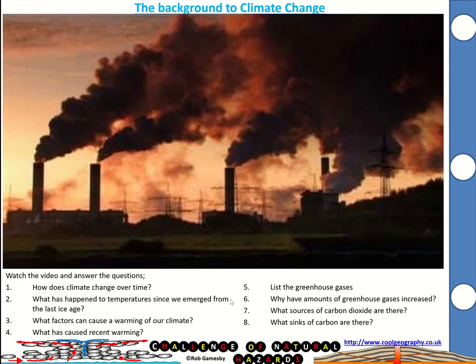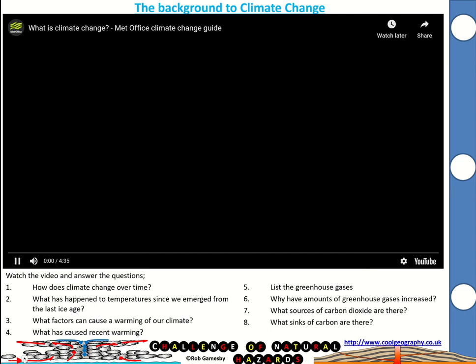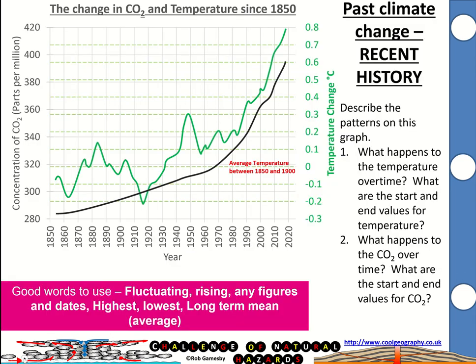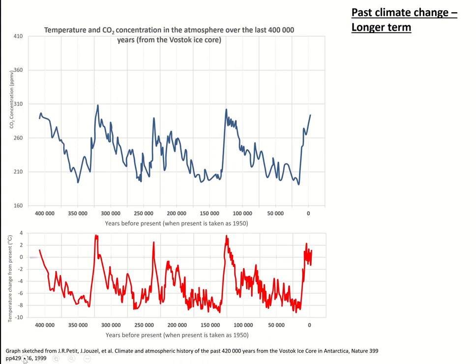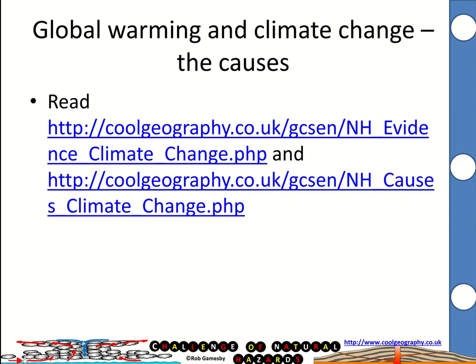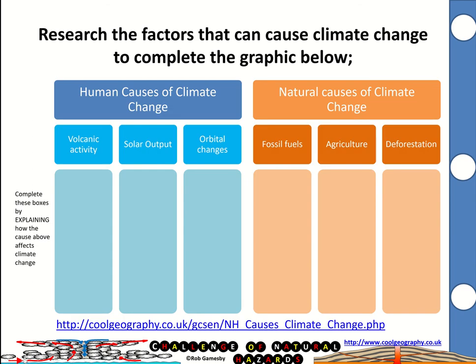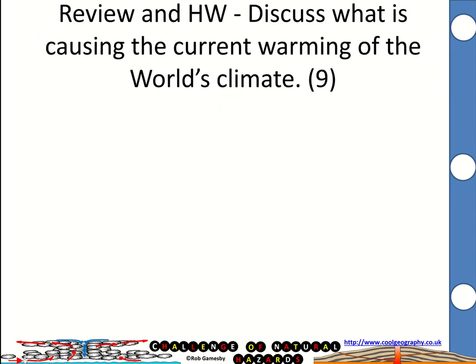Your tasks include watching a video and answering questions, describing the patterns on both graphs from the explainer, reading through two web pages, and completing a graphic explaining how volcanic activity, solar output, and other factors cause climate change — split into natural and human causes. There's also a question at the end: discuss what is causing the current warming of the world's climate. And to finish up with a little joke: if you're going on a date, start talking about global warming — it's a real icebreaker!